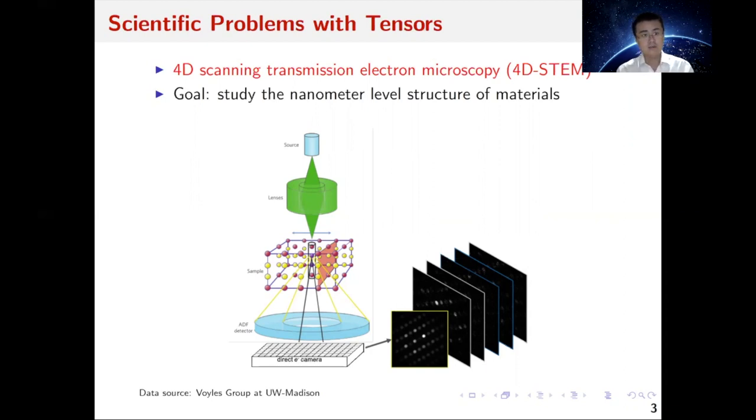This picture illustrates the mechanism of 4D STEM technology. On one side of the material we put a probe to emit electrons that penetrate the material. On the other side we put a 2D camera to receive the electron signals. For each position of the probe we generate a 2D picture, and the probe can move in two ways, so in the end we have a 4D image.